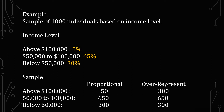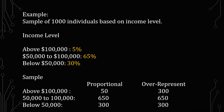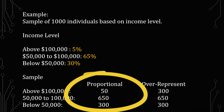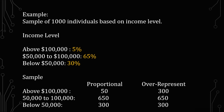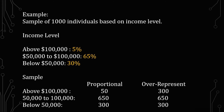Looking at an example: you have a sample of 1,000 individuals based on income level. First, you look at the distribution from a census or larger sample. Everyone above $100,000 is 5%, people between $50,000 and $100,000 make up 65%, and below $50,000 make up 30%. For a proportional sample that gives you 50, 650, and 300 respectively. When overrepresenting, you add 250 to the top group, giving you 300, 650, and 300. Then you apply weighting to bring that 300 back down to 50 — but that's a more advanced topic.